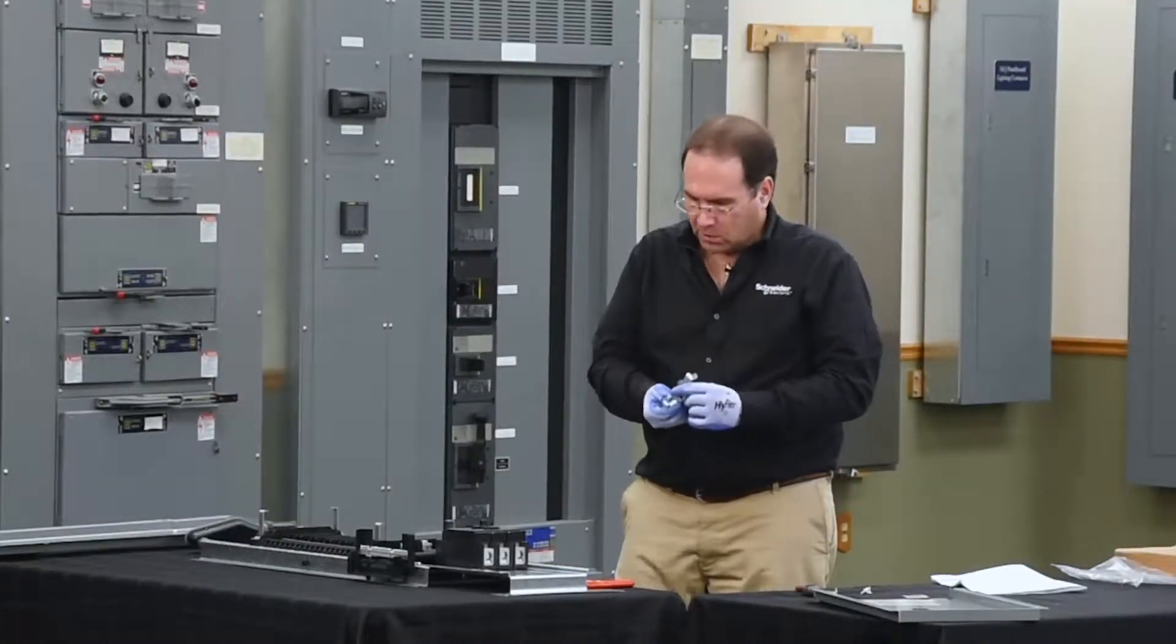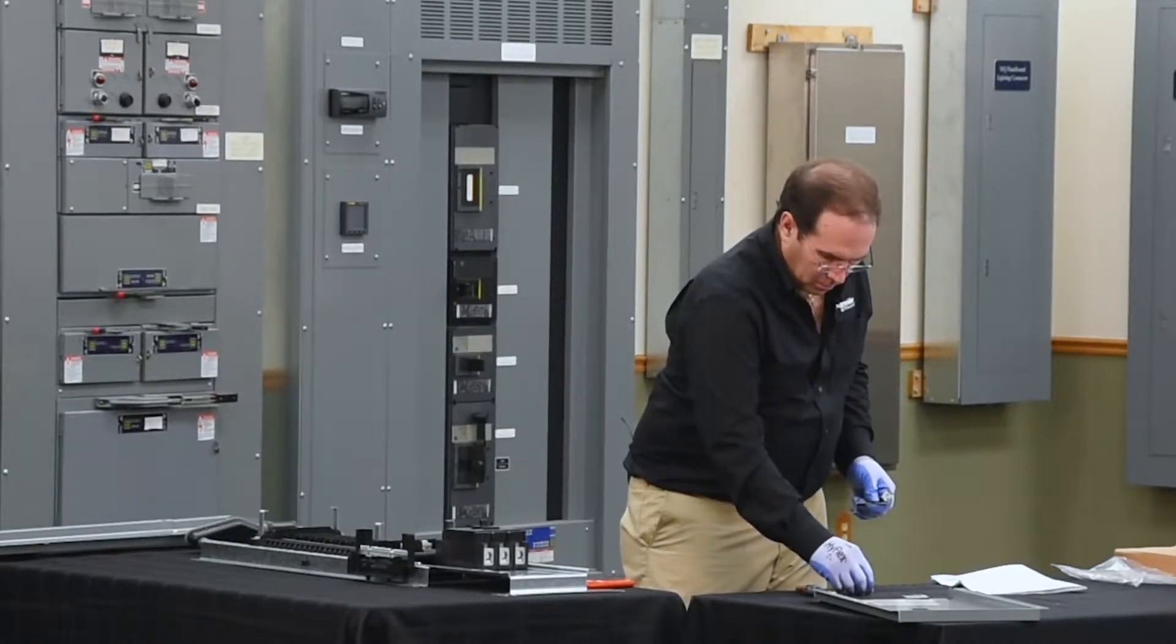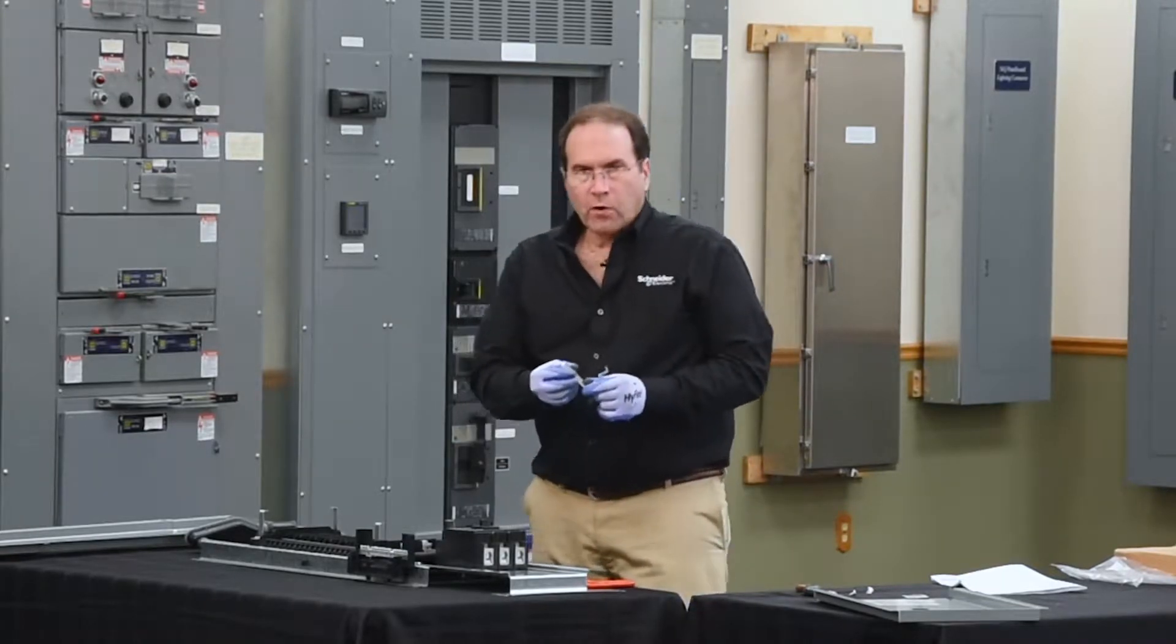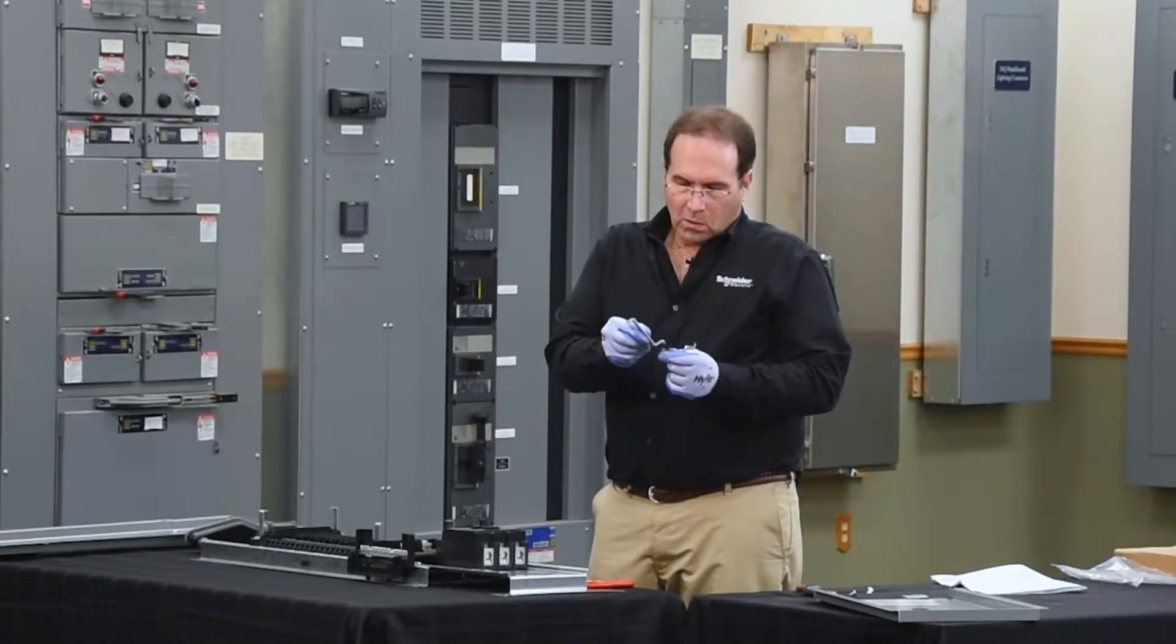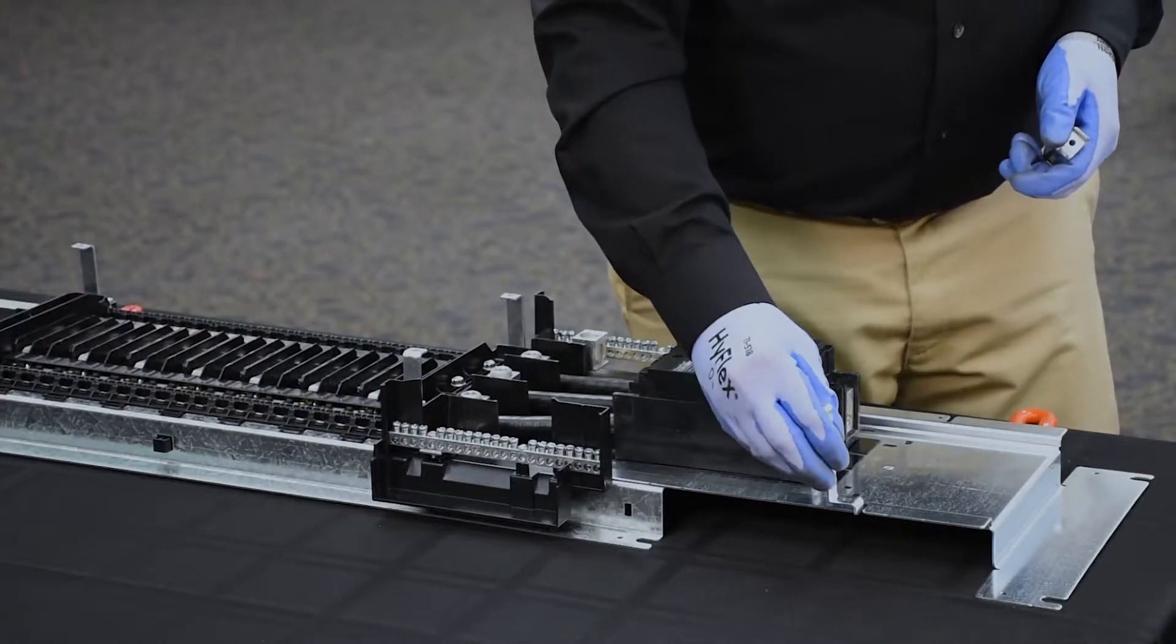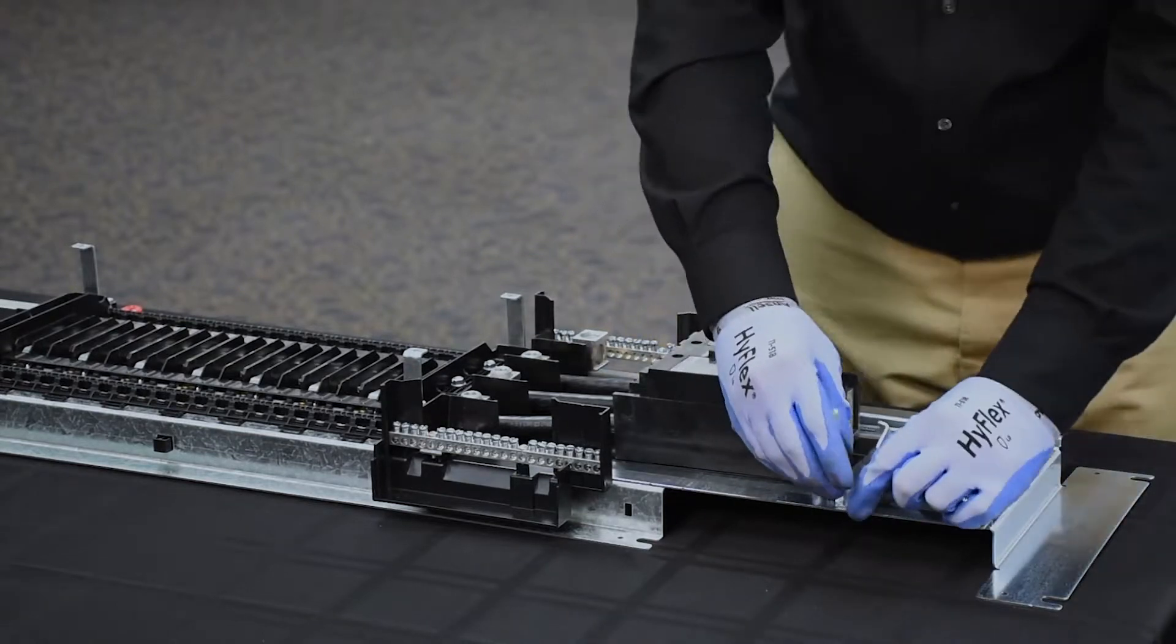Next, we'll install the dead front brackets onto the mounting pan. The dead front brackets are designed so that they have an anti-rotation feature that goes on the bottom side. This step slides into the slot in the mounting pan.